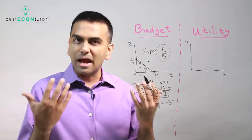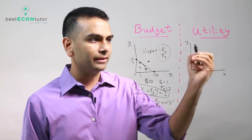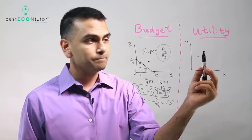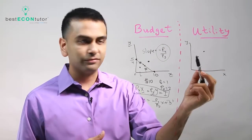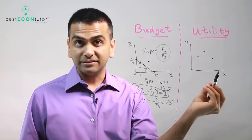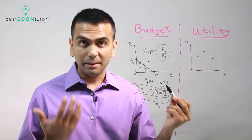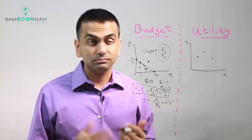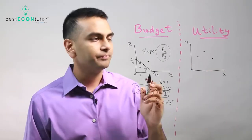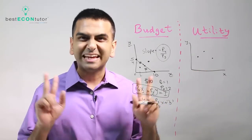If I ask you which point you prefer — without any numbers — you can say a point with more of both goods is strictly preferred. But if one point has more good X and another has more good Y, it's unclear which is better. They might even give you the exact same level of happiness. If they do, they're on the same indifference curve — that's a new term.